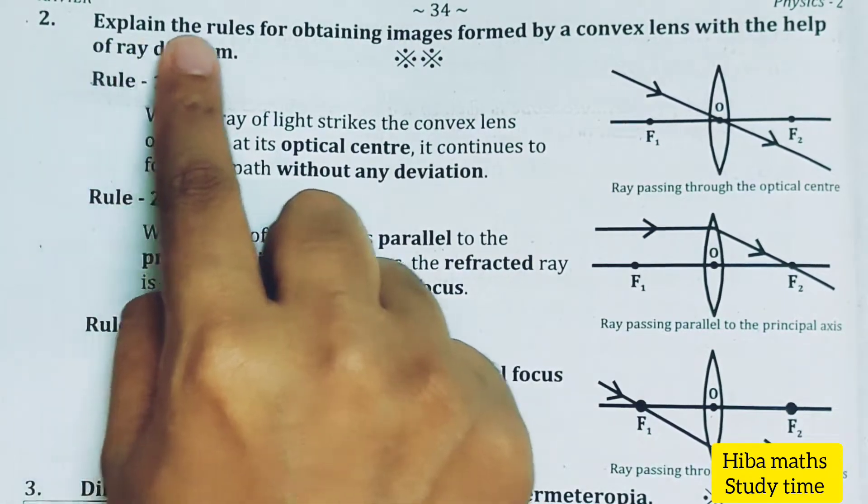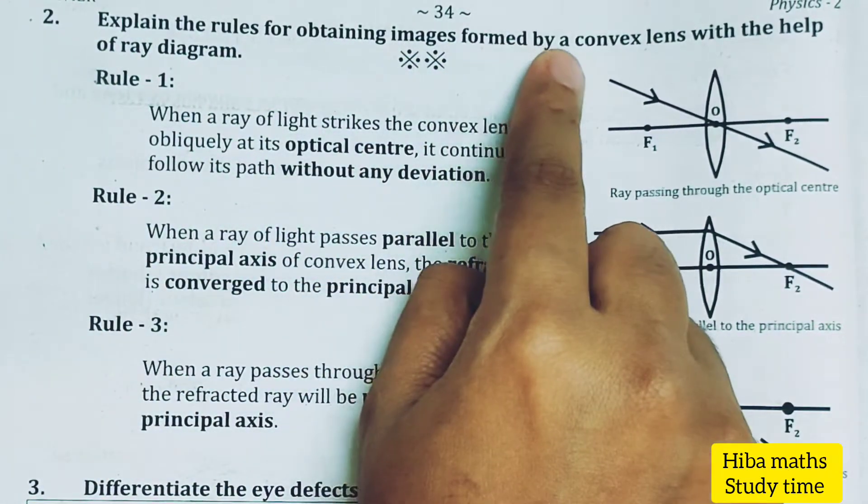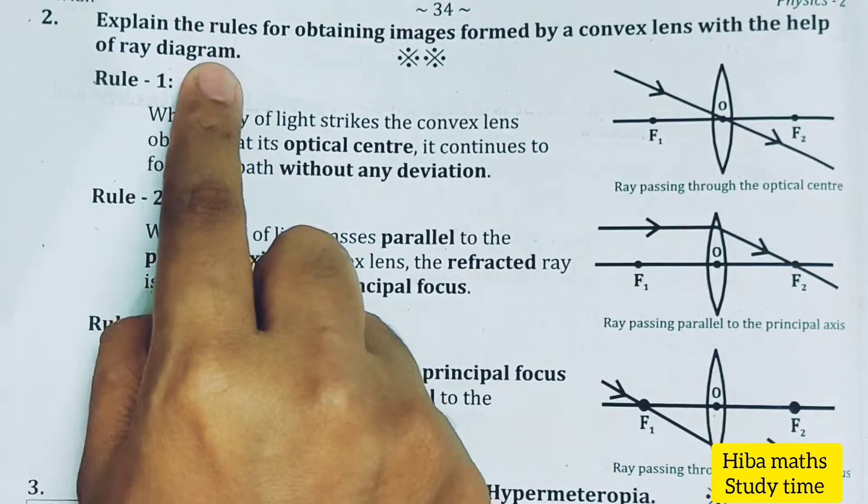Second question: explain the rules for obtaining images formed by convex lens with the help of a ray diagram.